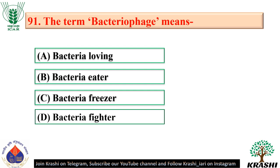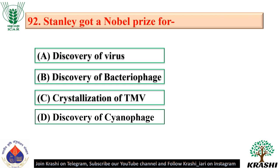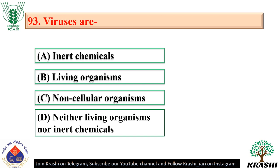Question number 91: The term bacteriophage means bacteria eater — option B. Question number 92: Stanley got a Nobel prize for crystallization of tobacco mosaic virus in 1935 — option C. Question number 93: Viruses are neither living organisms nor inert chemicals — option D — because they cannot replicate on their own but can do so in living cells.